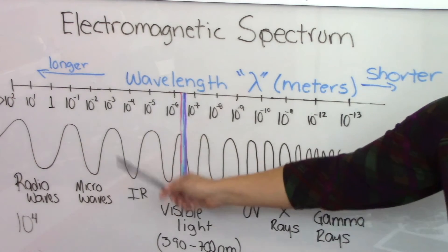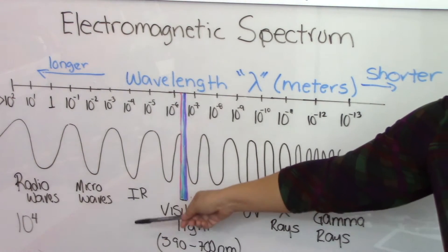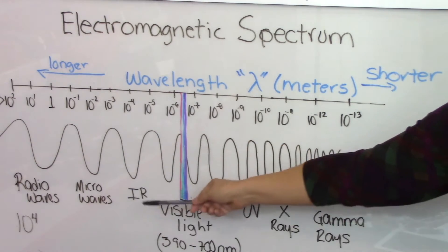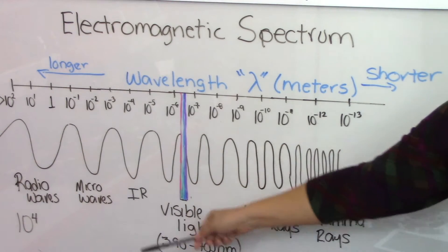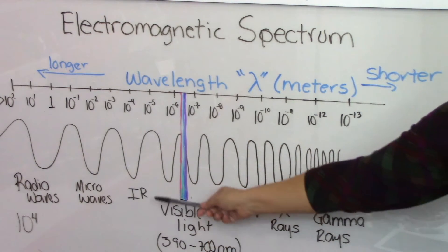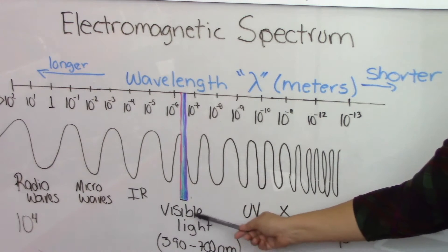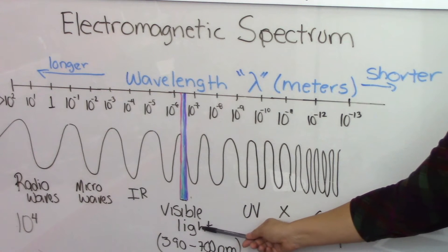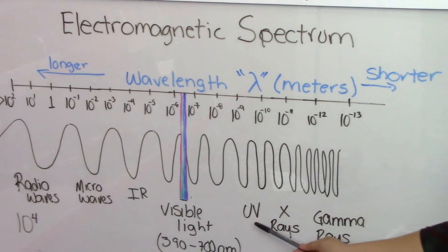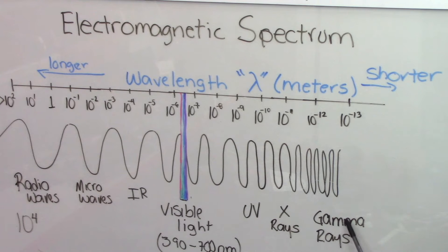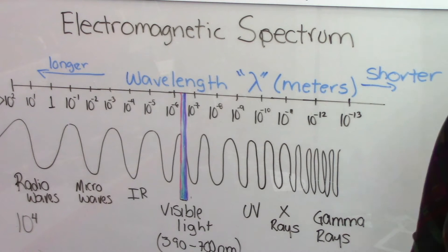Very long wavelengths are radio waves. Then we have microwaves, then the infrared region, then visible light, then ultraviolet, then x-rays, and then gamma rays.